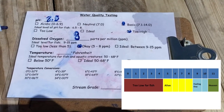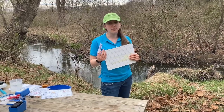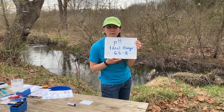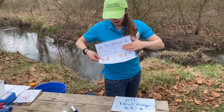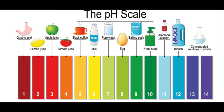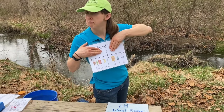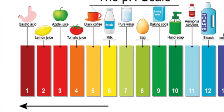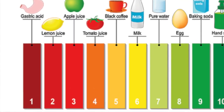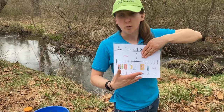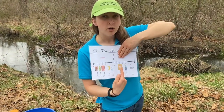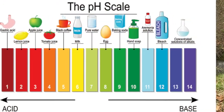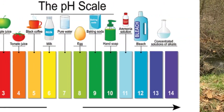Time for the next part of your chemistry station — we are going to study the pH of Bullskin Run. We have our pH scale: if pH is less than 7, what do we call those liquids? If you said acids, you are correct. Things like Coke, lemon juice, and stomach acid are all acids. We don't want our water to be too low on the pH scale. What do we call liquids above 7? If you said bases, you are correct.